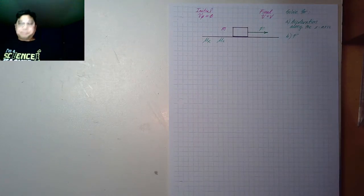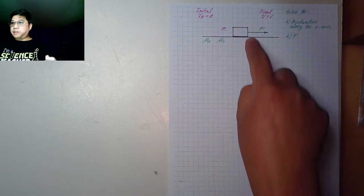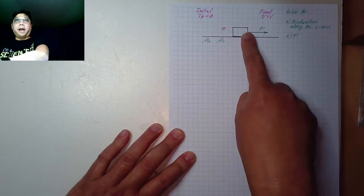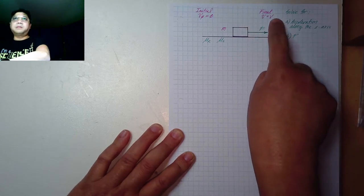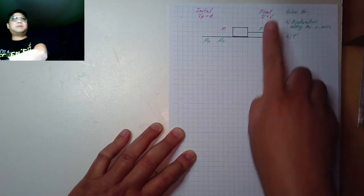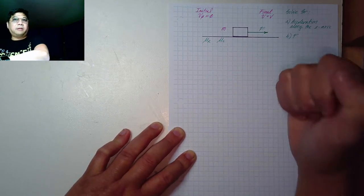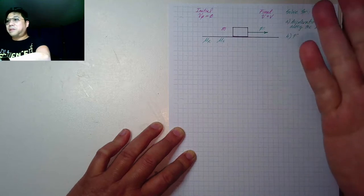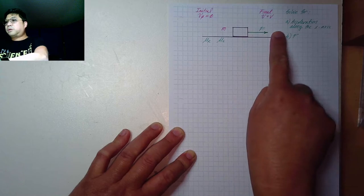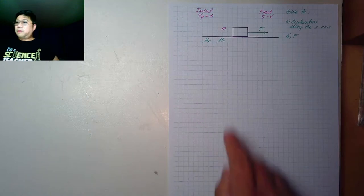Let's proceed by analyzing the problem. Here we have initially at rest, or the velocity is zero — it's not moving. Then suddenly a force is applied to the right and causes it to move at a positive velocity. I said positive because it's not indicated with a sign, so we make the assumption that if it's not negative, it is positive. So it's moving to the right at a velocity v — from zero to v.